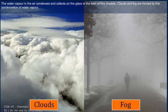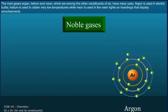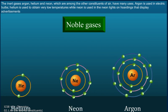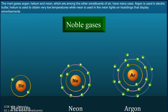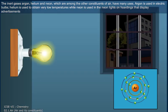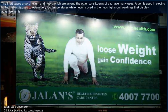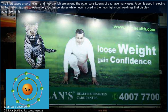Clouds and fog are formed by the condensation of water vapor. The inert gases — argon, helium, and neon — are among the other constituents of air and have many uses. Argon is used in electric bulbs. Helium is used to obtain very low temperatures, while neon is used in neon lights on hoardings that display advertisements.